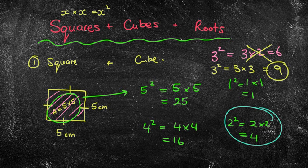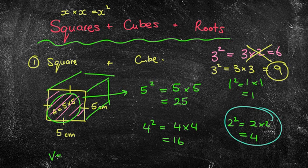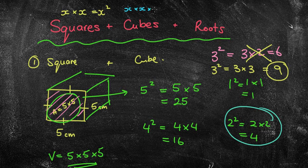So what does a cube mean? I'm going to extend this square into a cube. To find the volume of a cube you would do 5 times 5 times 5 — multiplying it by itself 3 times. So with a square you're doing it twice, whereas with a cube you're doing it 3 times. So x times x times x we would say is x cubed.